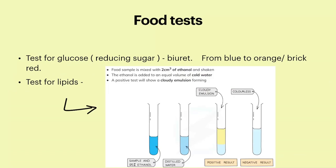Food tests. The test for glucose is a reducing sugar test. From blue, if glucose is present, it changes to orange or brick red. The test for lipids: the food sample is mixed with two centimeter cubes of ethanol and shaken, then the ethanol is added to an equal volume of cold water. A positive test will show a cloudy emulsion forming.